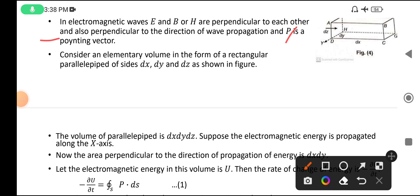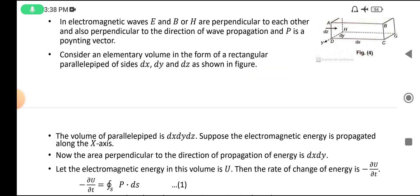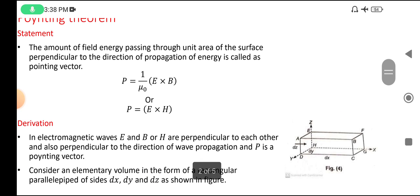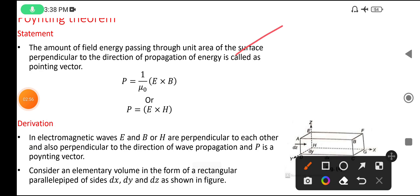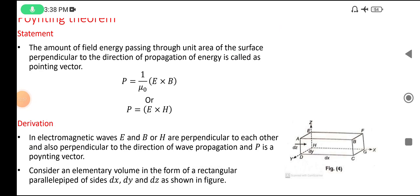Consider an elementary volume in the form of a rectangular parallelepiped of sides dx, dy, dz as shown in the figure. Here, field energy has to pass through unit area perpendicular to the surface.